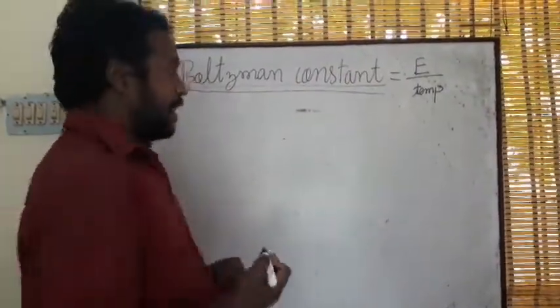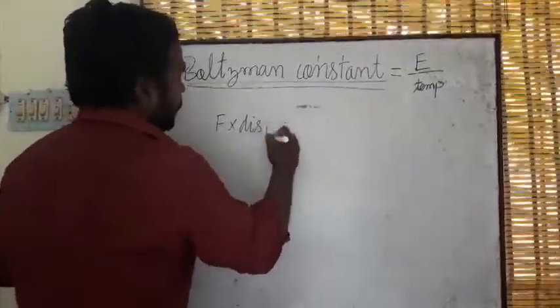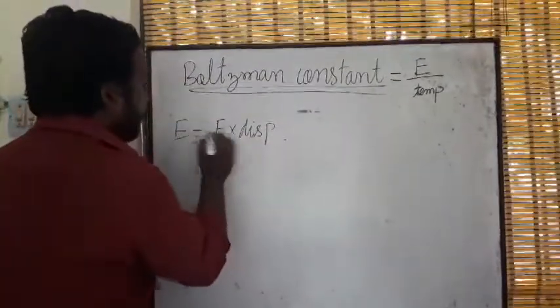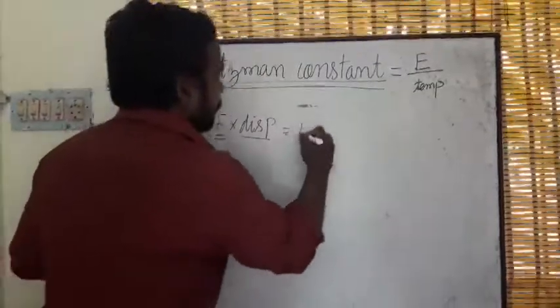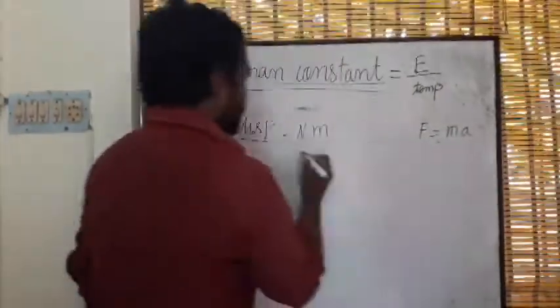We can also write energy as force into displacement. So the energy unit will be Newton meter. As we know, Newton is force, and force equals ma, that means mass into acceleration.